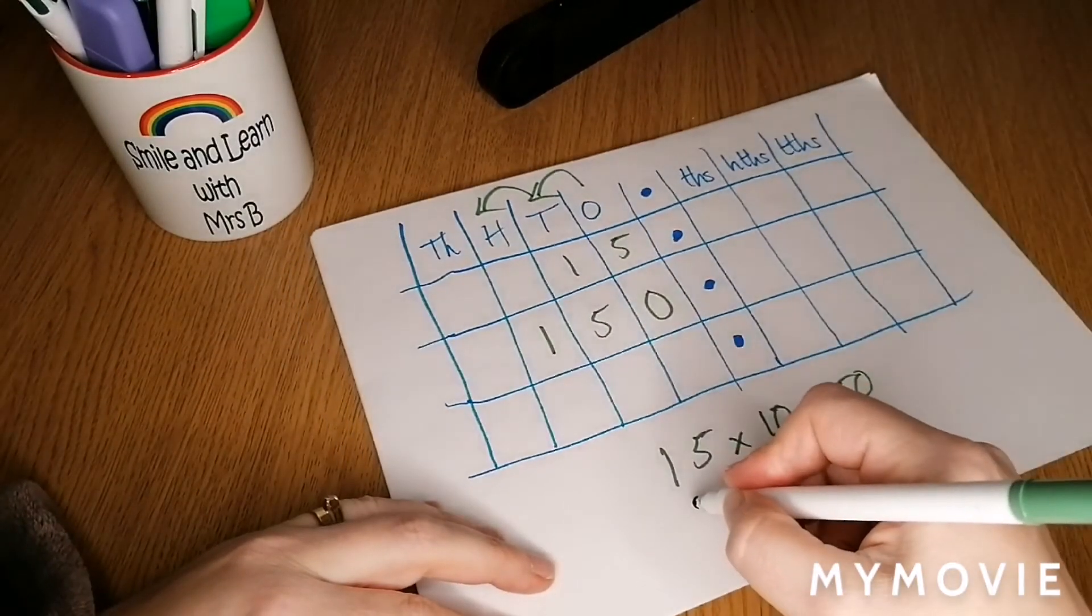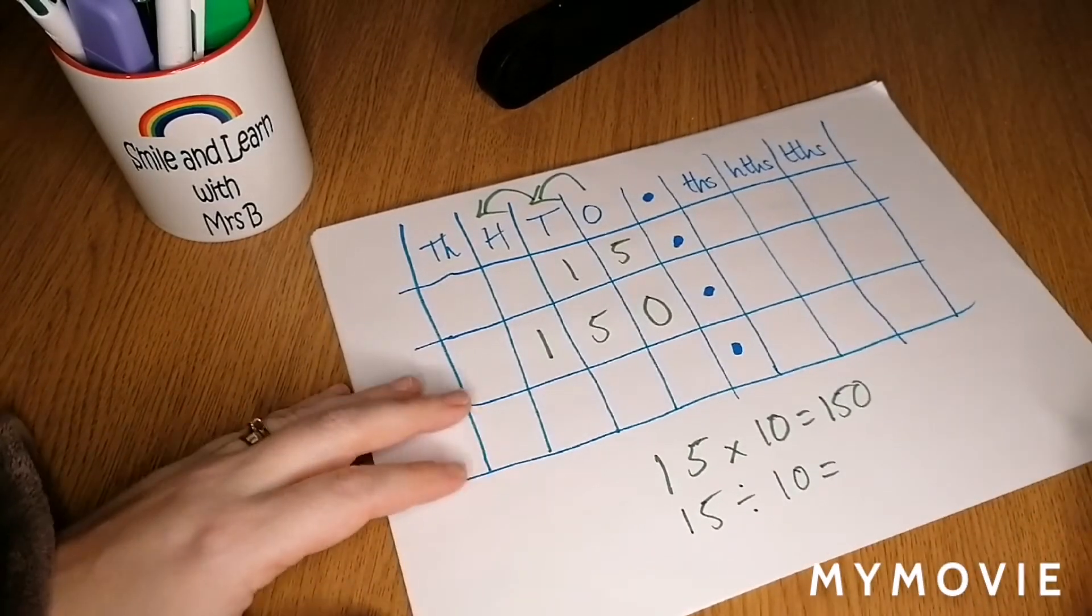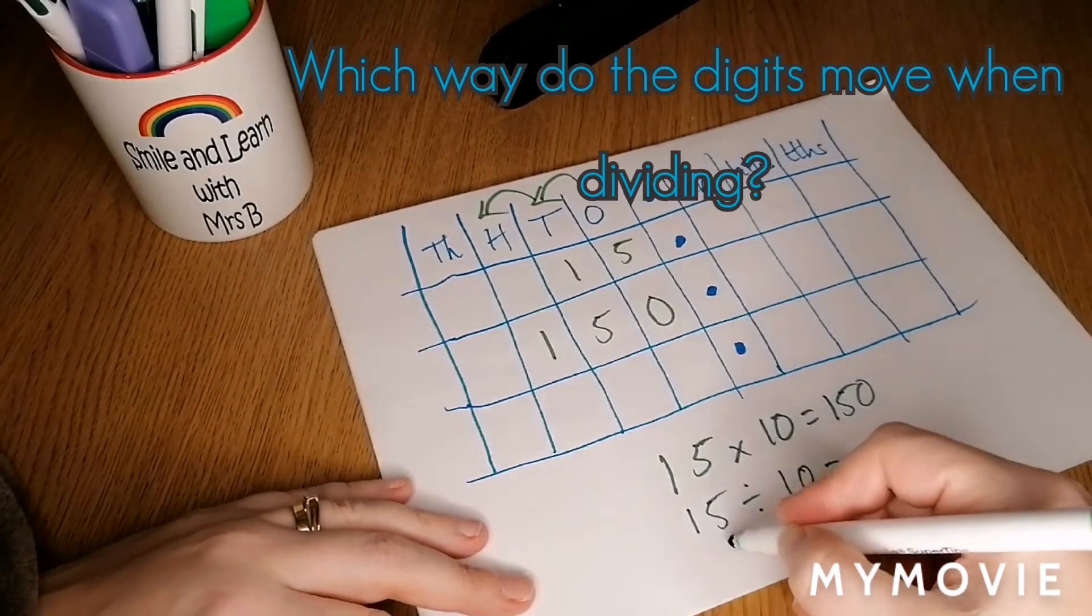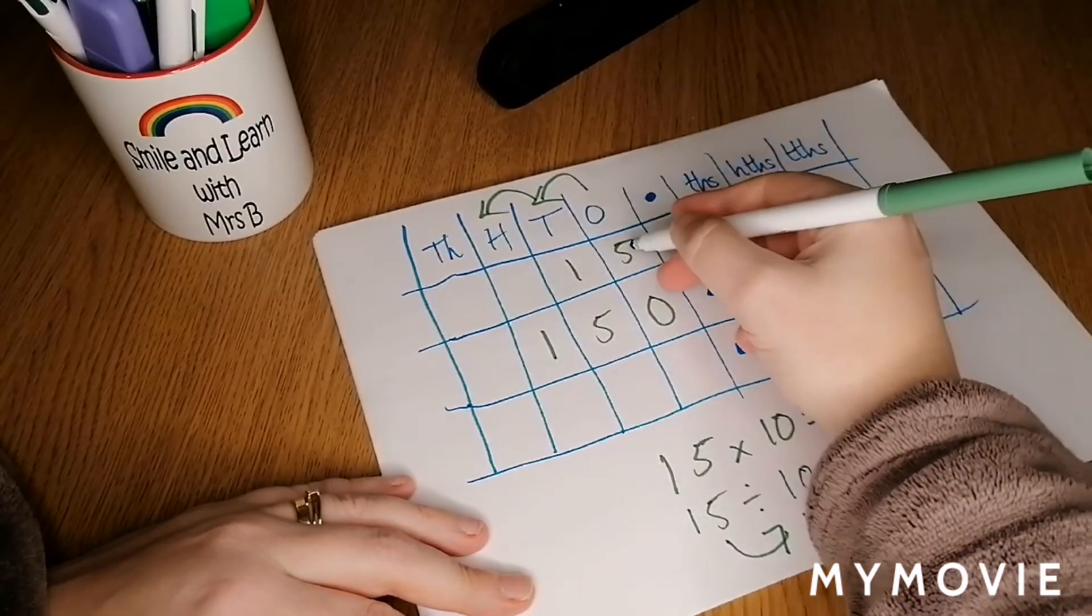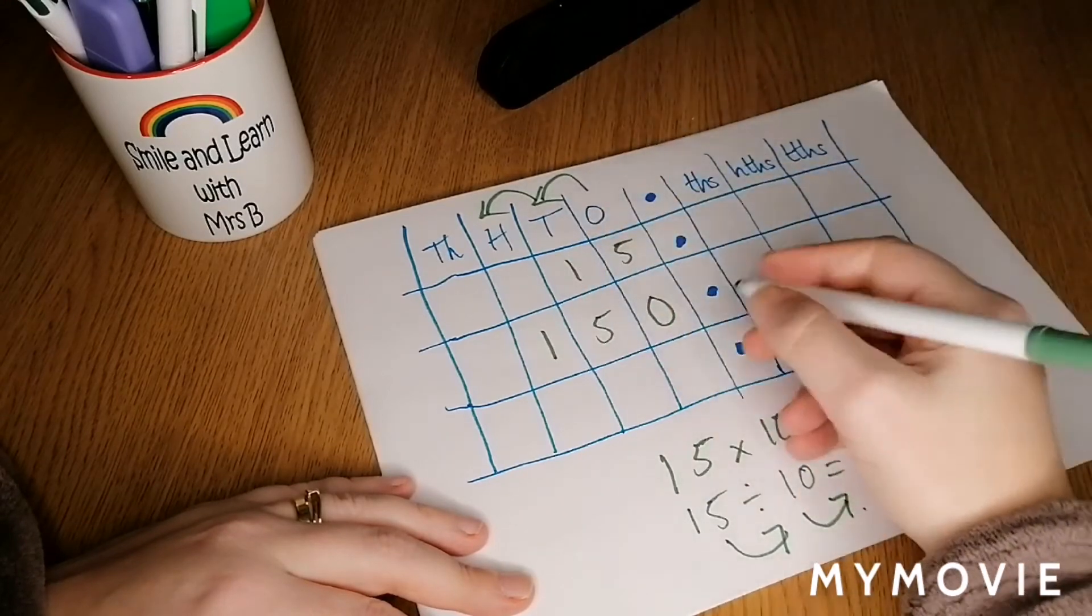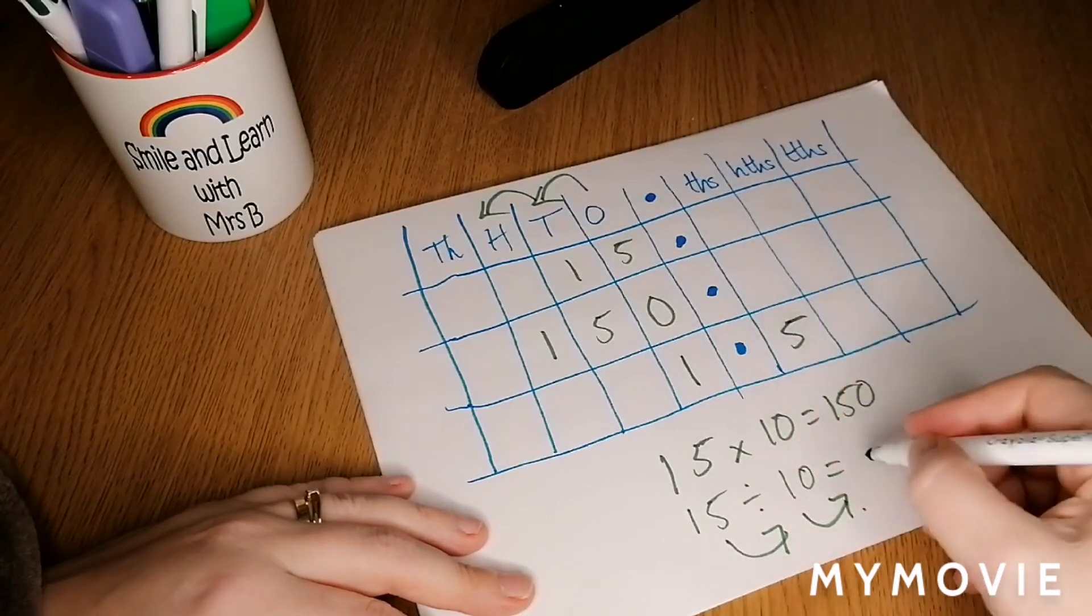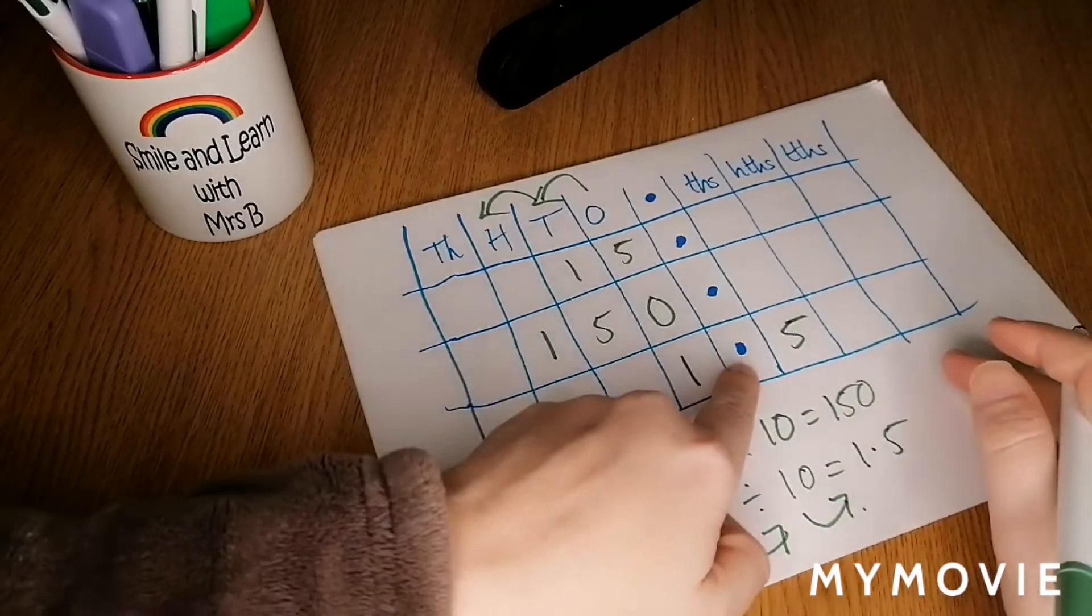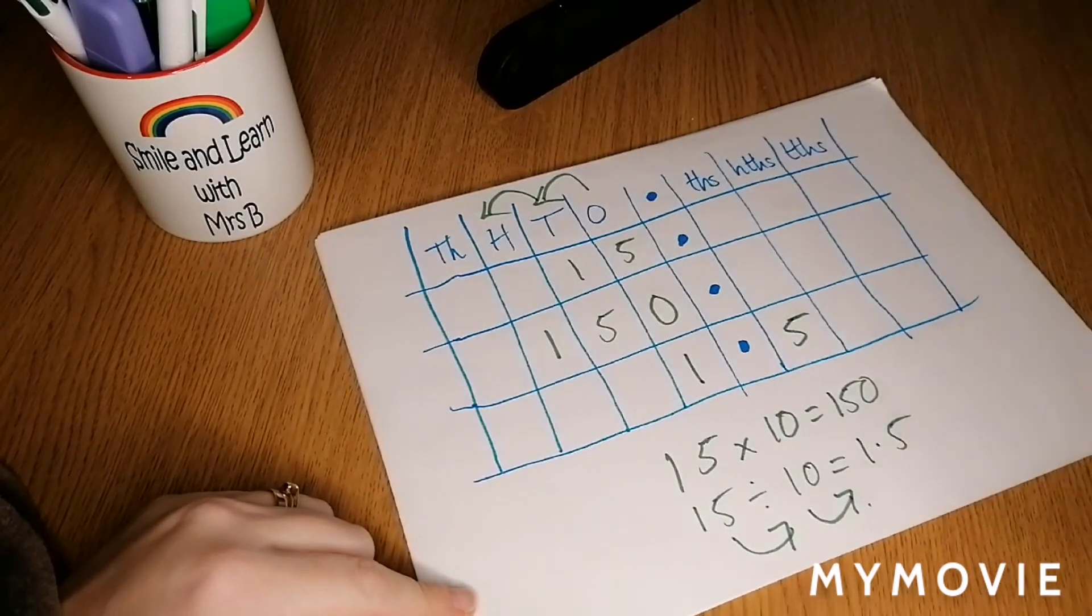So let's try it the opposite way then. 15 divided by 10—can you predict what the answer is going to be? Let's remember, digits move to the right. 15: five moves one place to the right in the tenths, one moves one place to the right in the ones. So 15 divided by 10 is 1.5. That's where the number after the decimal is important.